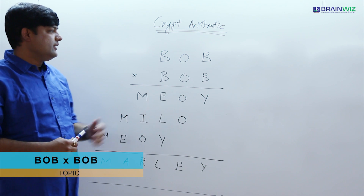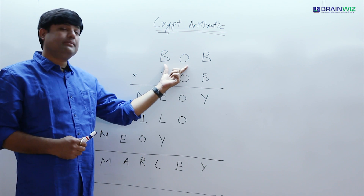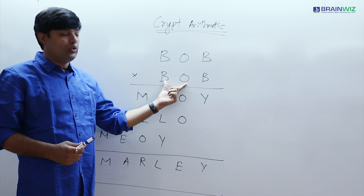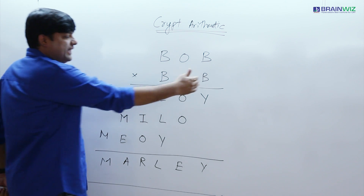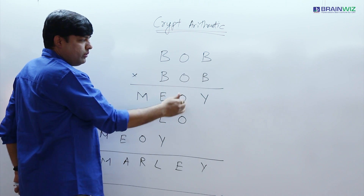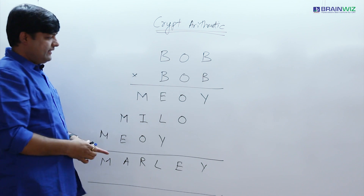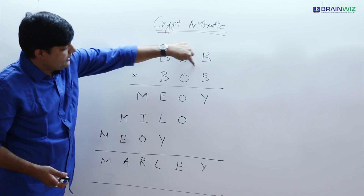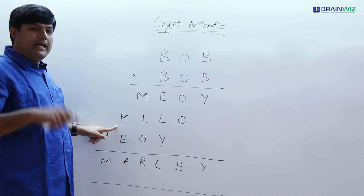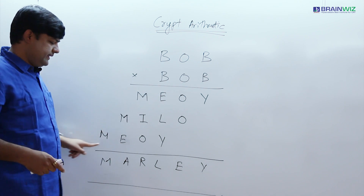BOB is a three-digit number which is multiplied with BOB again. The multiplication starts from here: B into B gives you Y, B into O gives you O, B into B gives you M and E. Same fashion, we have to multiply O with these three digits to get all those values. Again, same fashion, B is multiplied with BOB to get the third row.